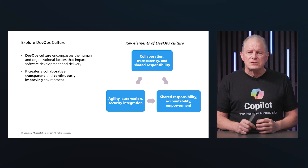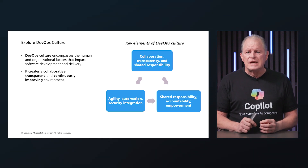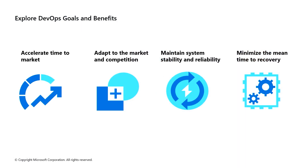DevSecOps is an extension of DevOps with the focus on integrating security practices into the DevOps processes. At the core of DevOps is the belief in the Agile Manifesto, which simply states: individuals and interactions over processes and tools, working software over comprehensive documentation, customer collaboration over contract negotiation, and responding to change over following a plan.